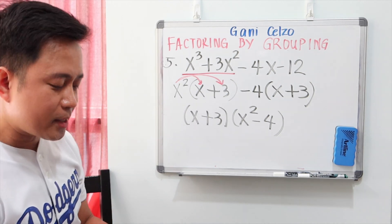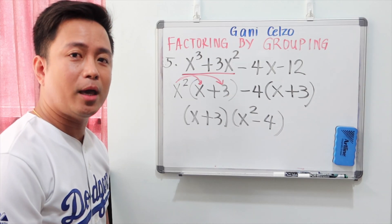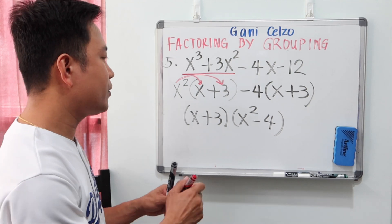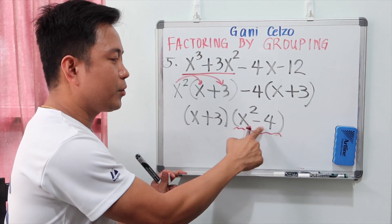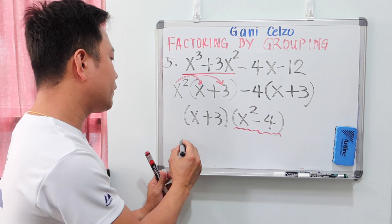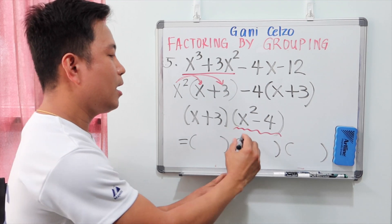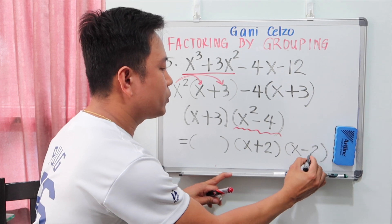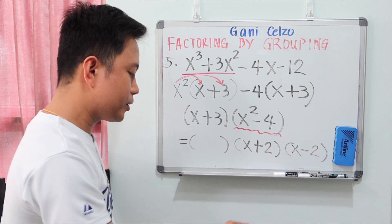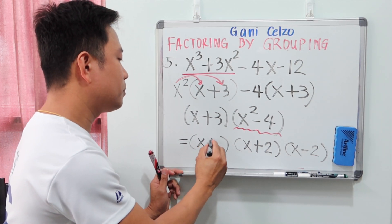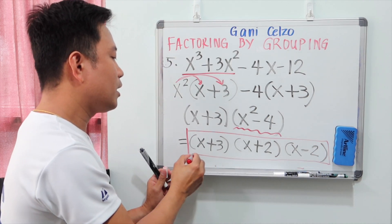Did you notice anything with the factors x plus 3 and x squared minus 4? We can factor x squared minus 4 further — it is a difference of perfect squares. So x squared minus 4 factors into (x plus 2)(x minus 2). The complete final answer is (x plus 3)(x plus 2)(x minus 2).